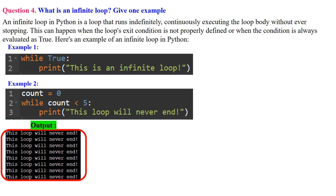Question 4: What is an infinite loop? Give one example. An infinite loop in Python is a loop that runs indefinitely, continuously executing the loop body without ever stopping. This happens when the loop's exit condition is not properly defined or when the condition is always evaluated as true.